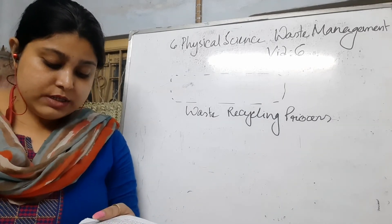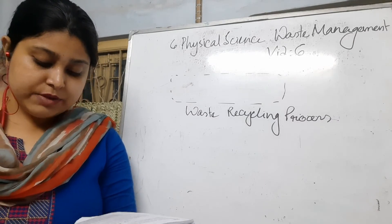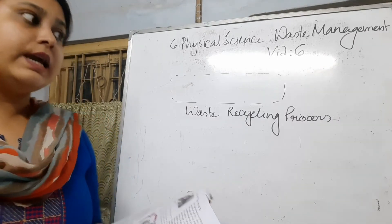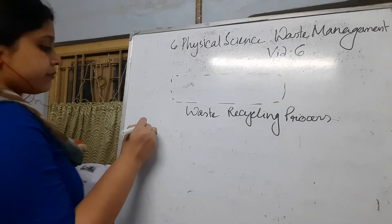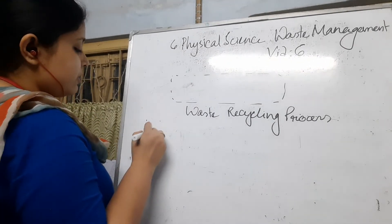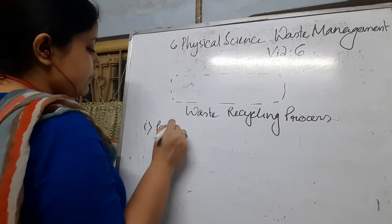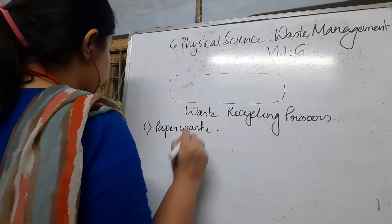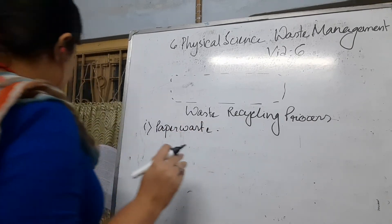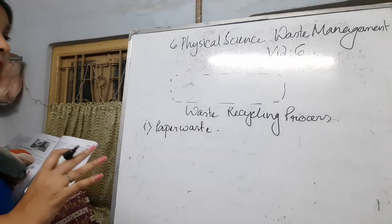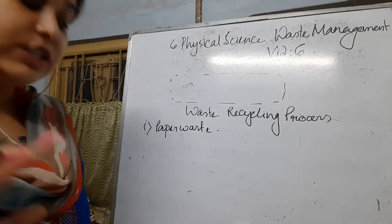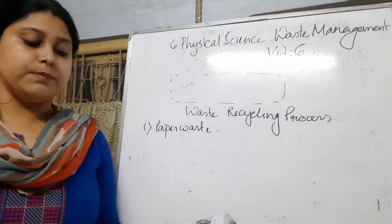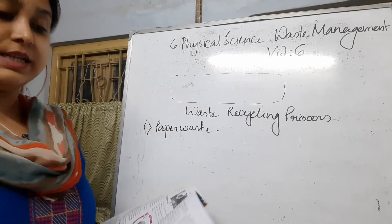Waste items that can usually be recycled include, first, paper waste. Paper waste includes books, newspapers, magazines, cardboards, boxes, envelopes, etc.